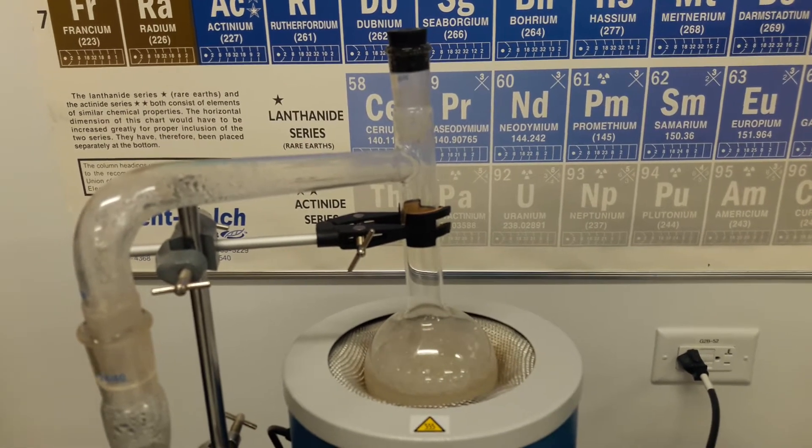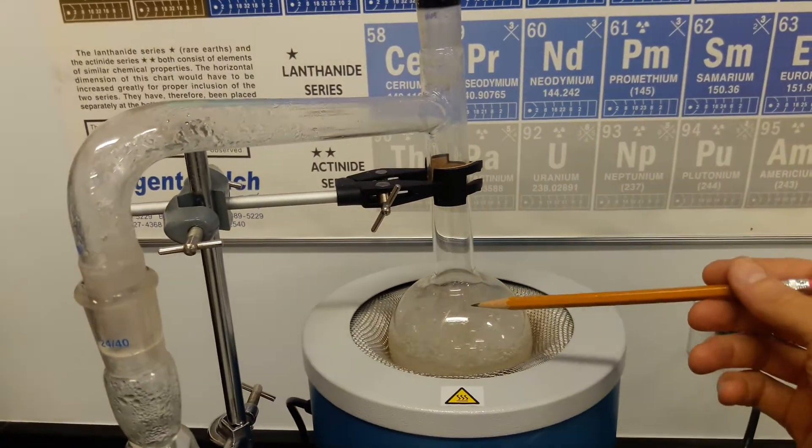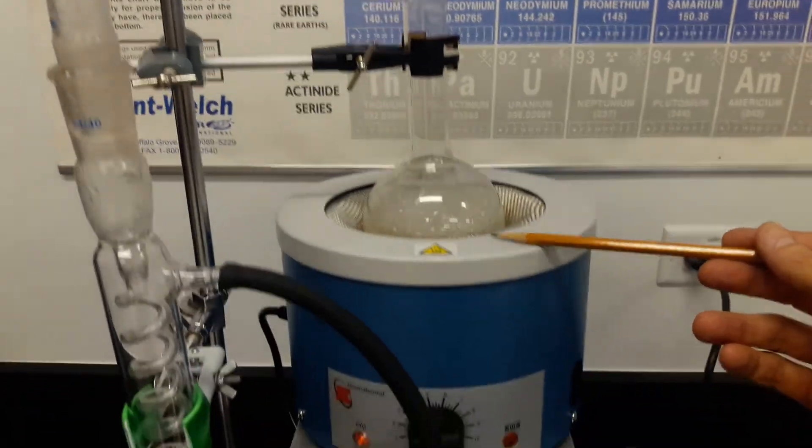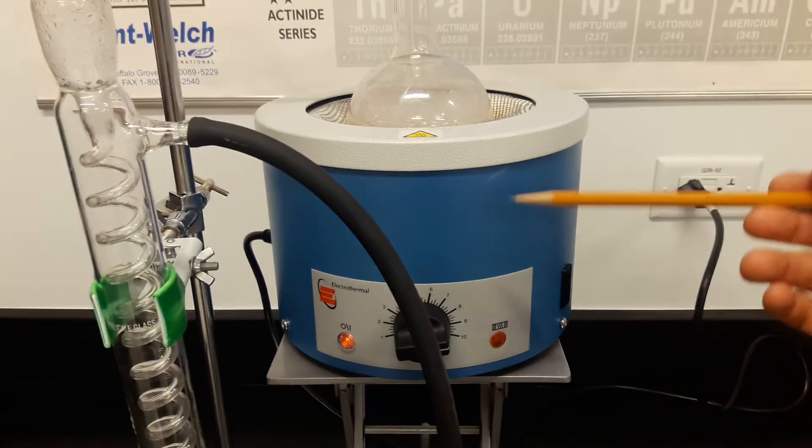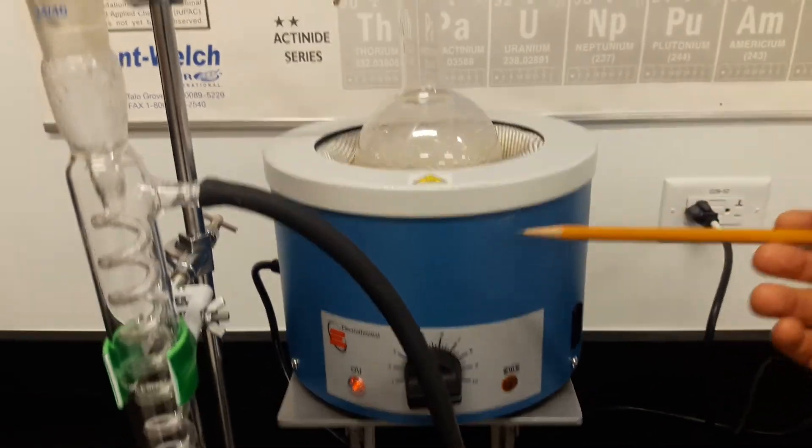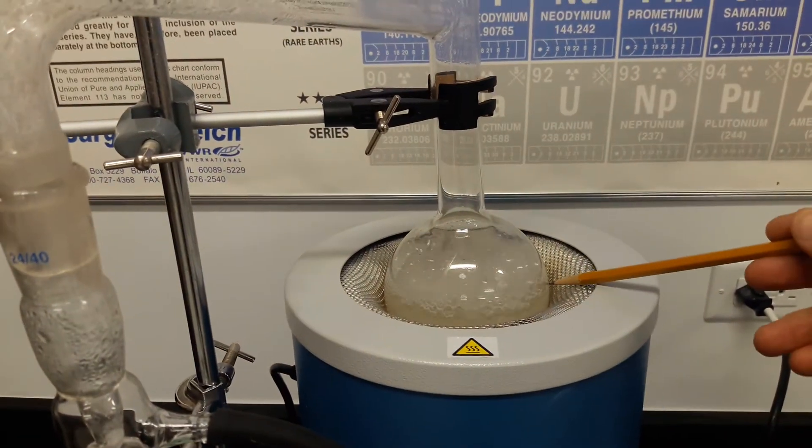The sugar wash is placed into this round borosilicate flask and that flask is then placed into a heating mantle. Rather than using a Bunsen burner, we use a heating mantle. It's simply a device that heats up the fluid in this flask.